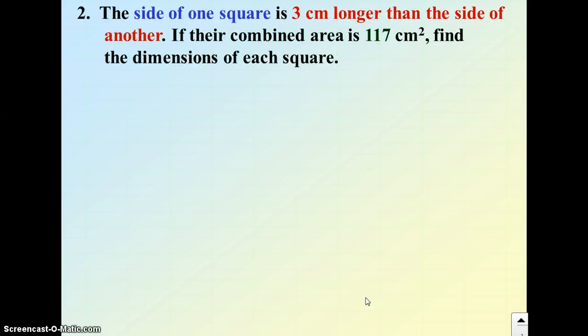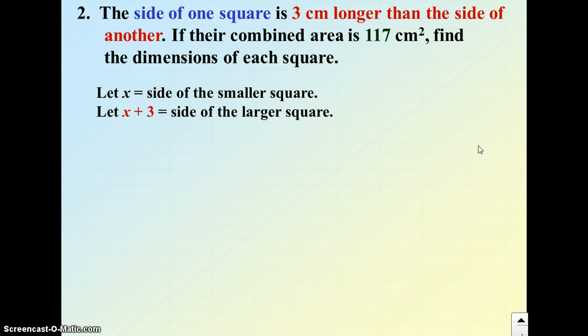Word problem 2. Let's try question 2. The side of one square is 3 centimeters longer than the side of another. The combined area is 117 square centimeters. So if I say the side of one square has a length of x and the side of the second square has a length of x plus 3, we're ready to work with this question. I can now write an equation. What's it say? Their combined area.